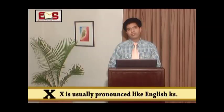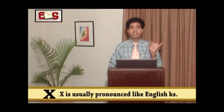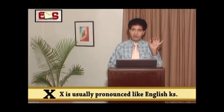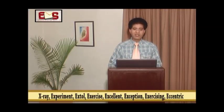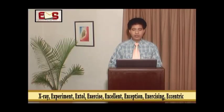And now we are going to learn the x sound. X is usually pronounced like k-s. So: x-ray. See, x — k and s, two letters are mixed together. X-ray, experiment, extoll, exercise, excellent, exception, exercising, eccentric. Now we have the double c, and double c is also giving the x sound. If you remember when we were learning 'except' — so double c and x are giving the same sound.